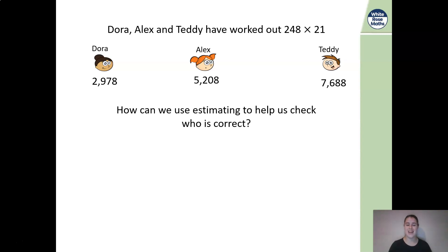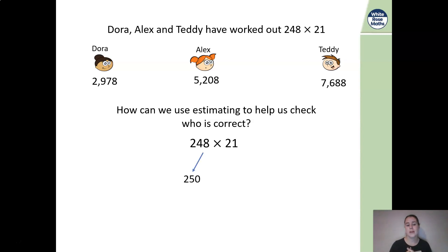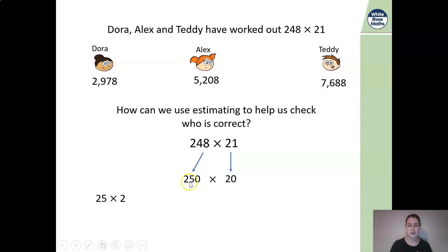Estimating is when we make an educated guess. When we estimate, we round our numbers — so this is when your rounding skills come into play. We could round 248 to 250 because we're not far off, and round 21 to 20. So we need to work out 250 multiplied by 20. If we break this down and take off our zeros, we can do 25 times by 2. This is our smile method — underline the 25 and the 2 and draw a smile to connect them. 25 multiplied by 2 is 50.